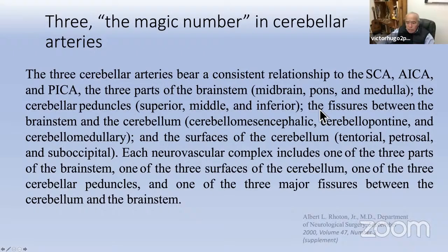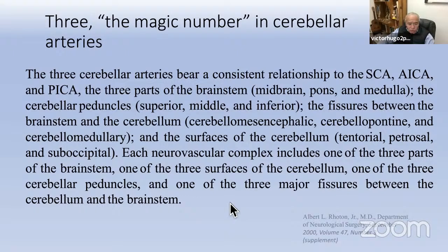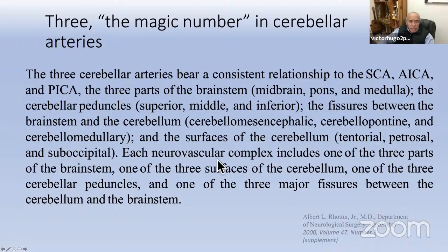Rhoton defined these arteries as the magic number — the number three. The three cerebellar arteries — SCA, AICA, and PICA — bear a consistent relationship to the three parts of the brainstem: midbrain, pons, and medulla; the three cerebellar peduncles: superior, middle, and inferior; the three fissures between the brainstem and cerebellum; and the three surfaces of the cerebellum: tentorial, petrosal, and suboccipital. Each neurovascular complex includes one of each of these three structures. This was defined as the magic number by Dr. Albert Rhoton.